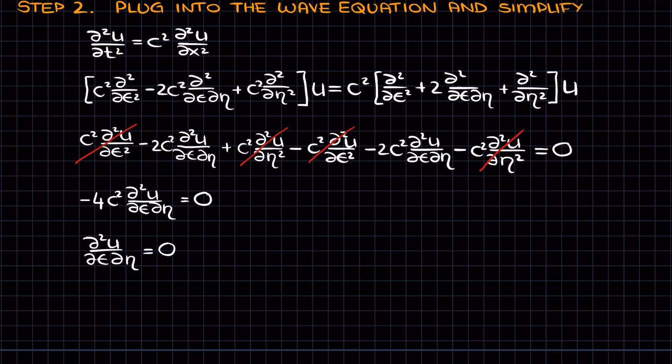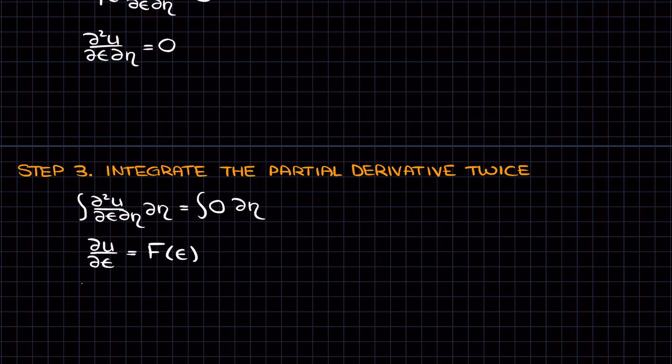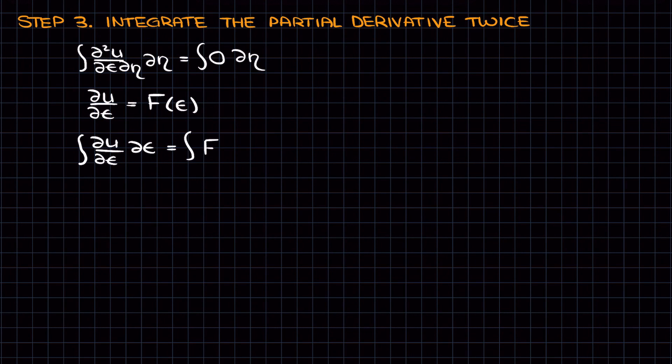Let's now integrate twice, once with respect to eta and then to epsilon. Recalling that we're dealing with partial differential equations, instead of a constant of integration, we get a function of the variable that we're holding constant.